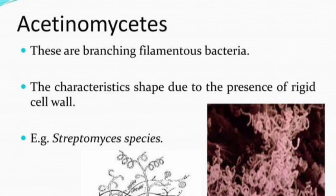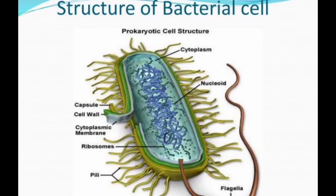The shapes of bacteria are due to the presence of a rigid cell wall. The structure of a bacterial cell is prokaryotic. It includes hair-like structures called pili, tail-like structures called flagella used for locomotion, as well as a capsule, cell wall, cytoplasm, membrane, ribosomes, nucleoid, and plasmids. This is a very important topic. Thanks for watching the video — don't forget to subscribe to our channel for more educational content like this.